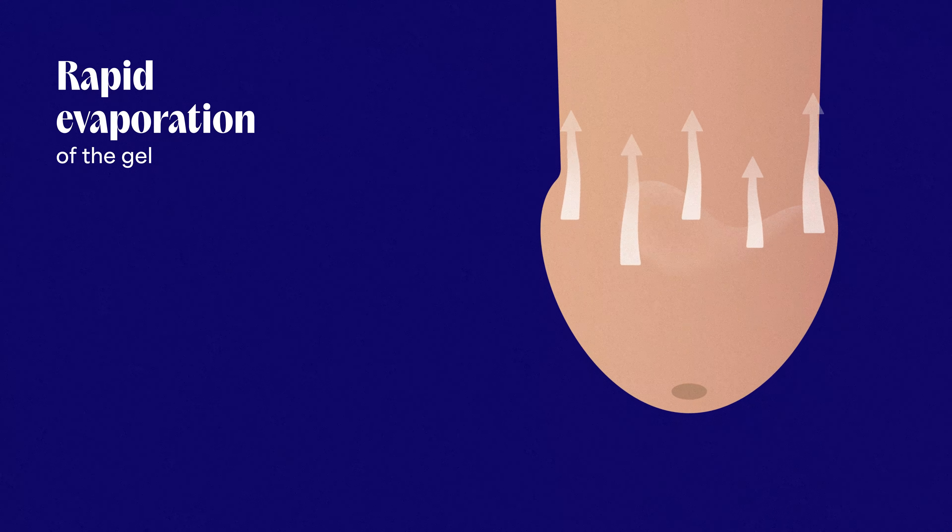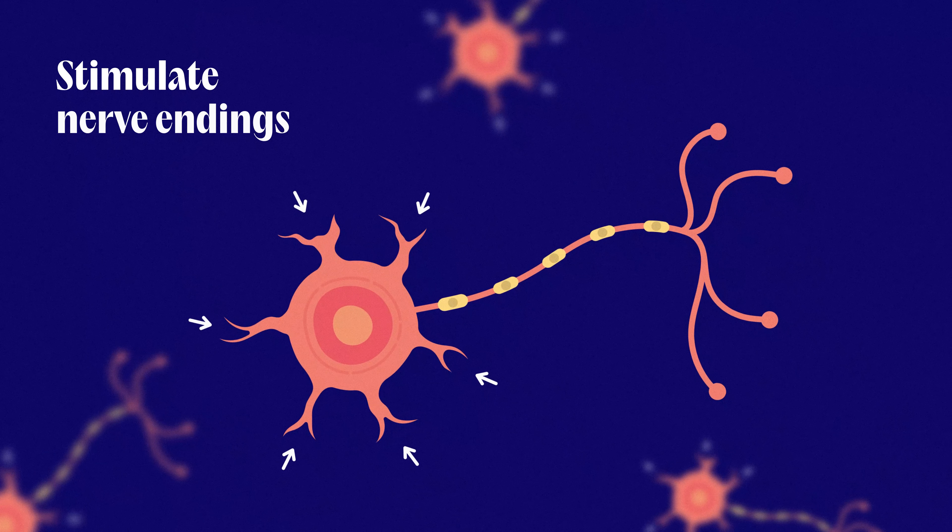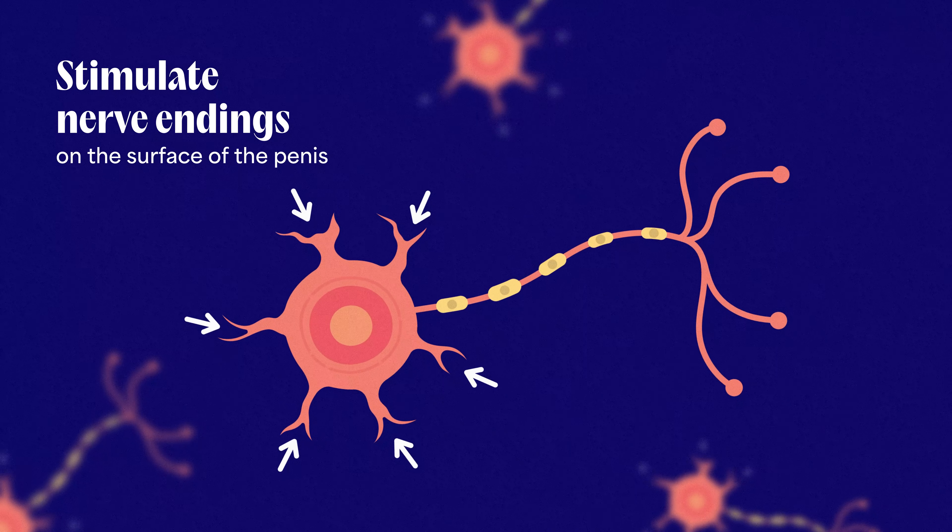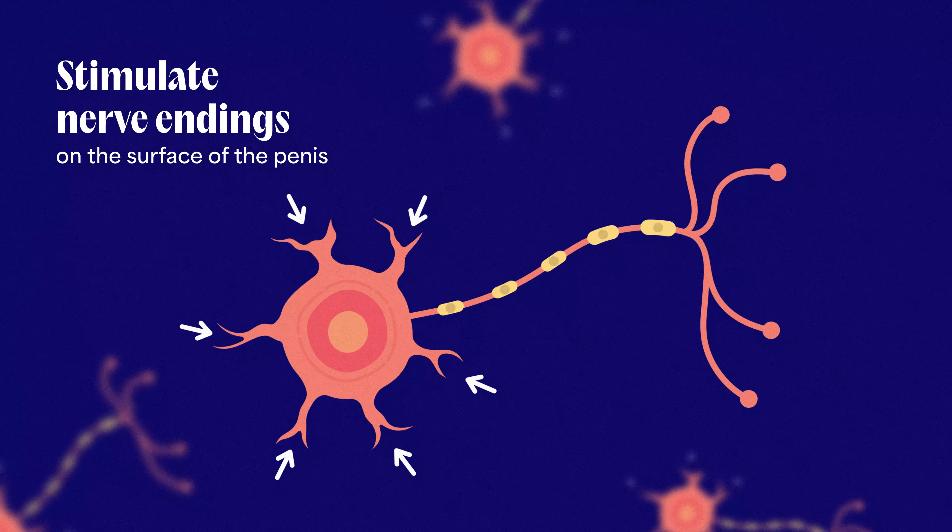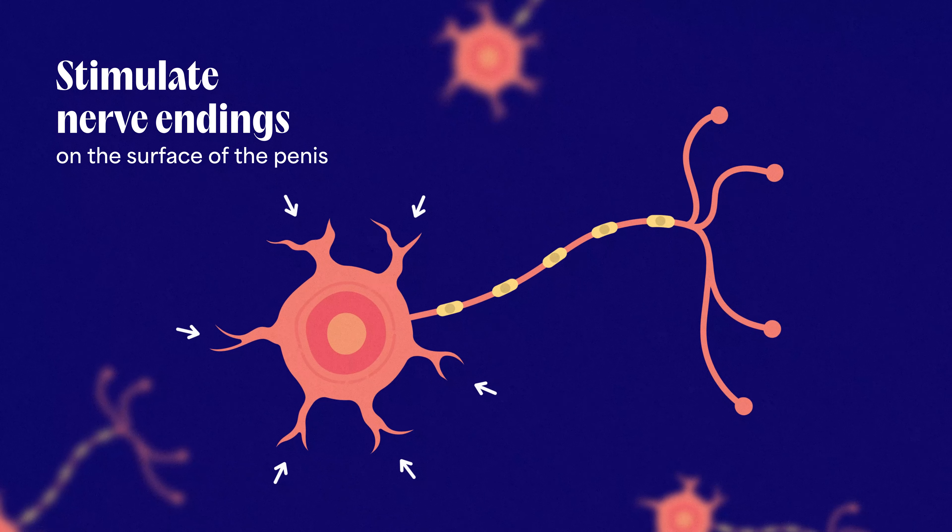The application and rapid evaporation of the gel stimulates nerve endings on the surface of the penis that are highly responsive to very subtle changes in temperature and pressure.